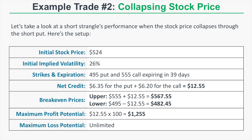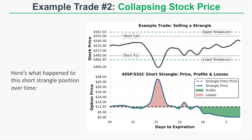The stock price remained around $525 for the first week, then collapsed to around $460 — well below our short put strike of $495. When that happened, the strangle's price increased to around $48. Since we sold it for $12.55, when the strangle reached $48 we were sitting on a loss of $36 per strangle, which equates to a $3,600 loss per short strangle.